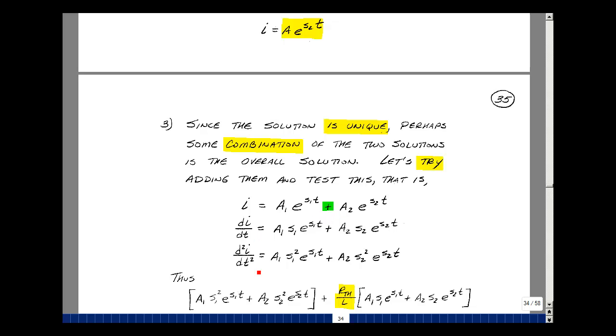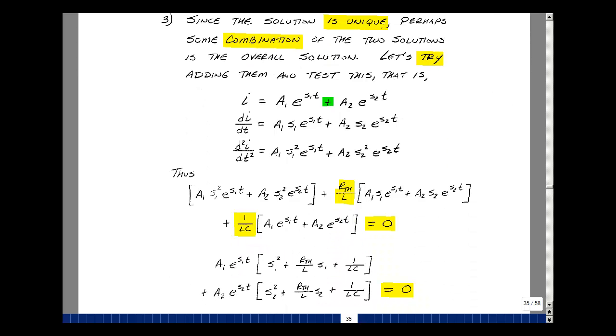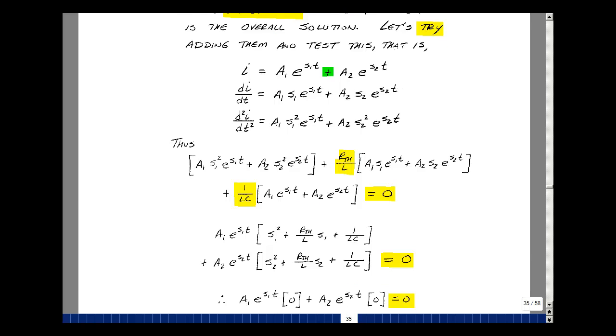So we need the first derivative and the second derivative. So the first derivative is going to give me S1 e to the S1t times A1, and then S2 e to the S2t times A2. Second derivative, we'll get another S1, and we'll get another S2. Let's put this all together. The first term was the second derivative of I. It's this term right here. Then we had R thevenin over L times the first derivative, which is here. And then 1 over LC times our function I of t. That should equal zero if this is a solution.